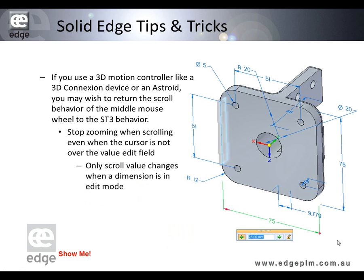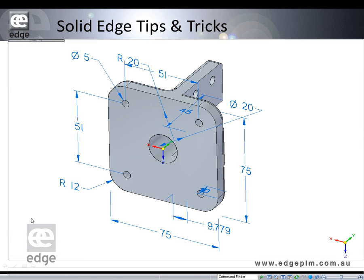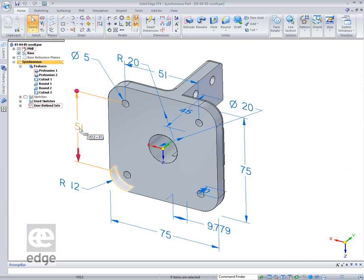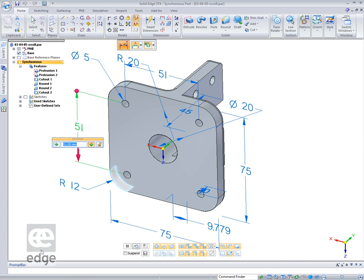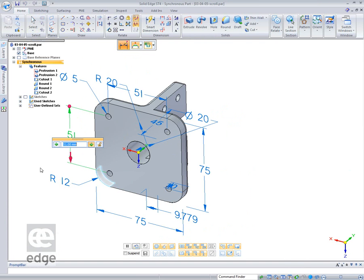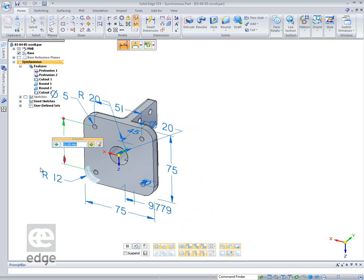Many of you using Solid Edge for some time have been aware you can use the middle mouse button or the scroll wheel to zoom in and out, which can be quite useful. You can also use it for changing a dimension. With ST4 we made a change to the way that operates — you now have to hold the cursor over the dimension value in the dimension edit box to affect the cursor change; otherwise it will zoom in and out. Let's take a look in Solid Edge. If I select this dimension, the dimension value comes up. If I now point my cursor out onto the screen and roll the cursor, we'll see it zooms.